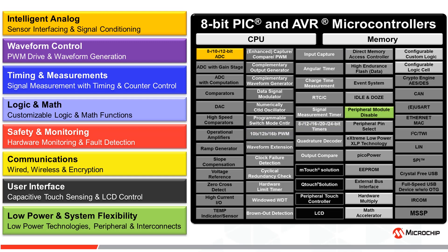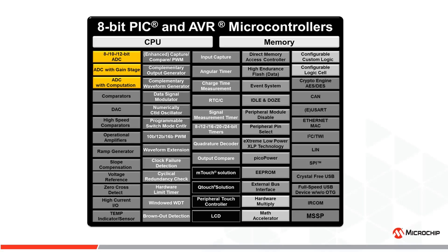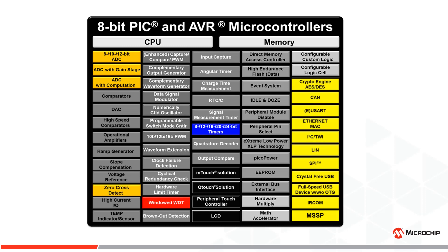Last but not least is Sleep mode. Sleep mode completely halts the system clock, effectively turning off the CPU and all peripherals using the system clock. Sleep mode is great for low power, but fortunately there are many peripherals that still work in Sleep mode, including an ADC, the windowed watchdog timer, zero-cross detect, Timer0, serial communications like the MSSP, high voltage level detect, and many more.